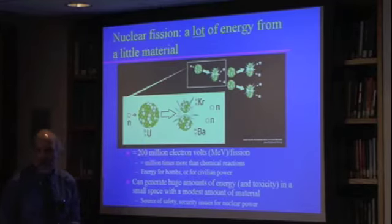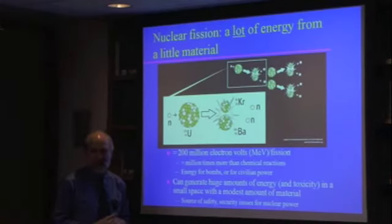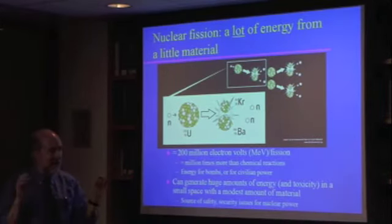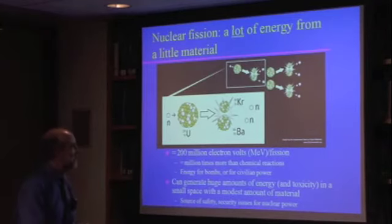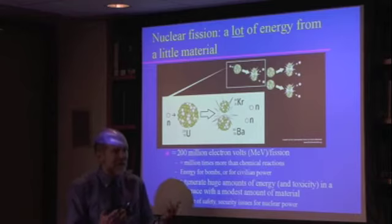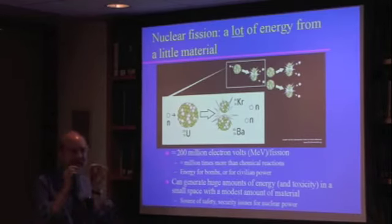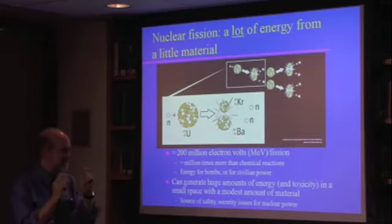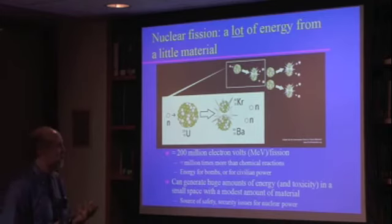Now each of these fissions releases something of the order of 200 million electron volts of energy. Now that's a teeny tiny amount of energy, but on an atomic scale it's a huge amount of energy. It's about a million times more energy than would be released in a typical chemical reaction like something taking place in explosives. And so that is really the nut of the nuclear problem in a certain sense, that this tiny amount of material can release this immense amount of energy, energy for bombs or energy for civilian power.